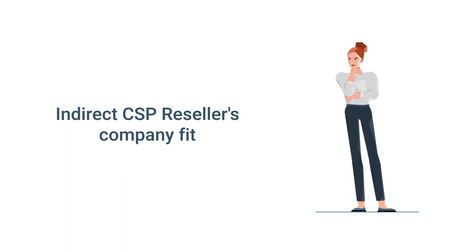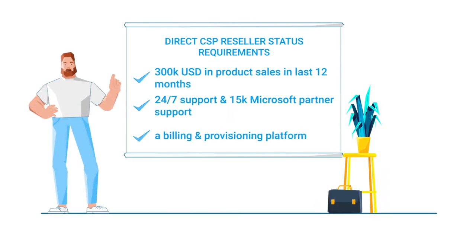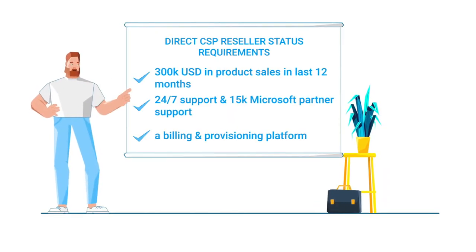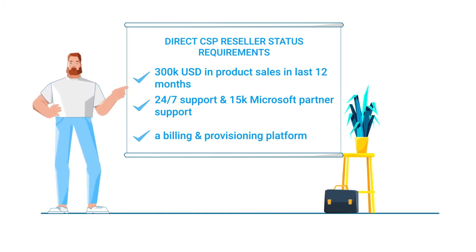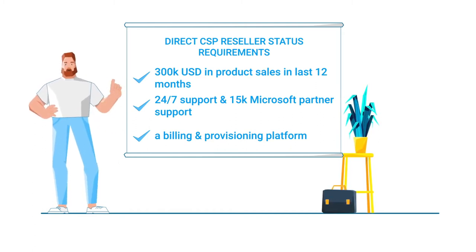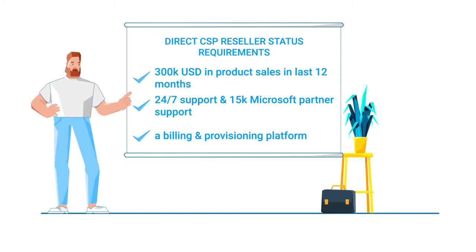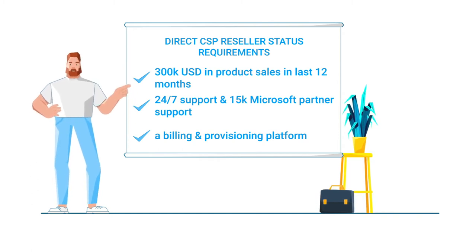Direct CSP status is awarded to organizations that have at least $300,000 US dollars in annual product sales, the ability to provide 24/7 support and purchase a Microsoft partner support package, and a billing and provisioning infrastructure.